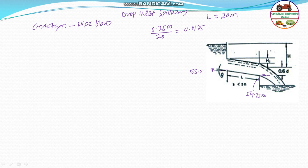The headwater elevation is given as 56.60 meter, and the tailwater elevation is 53.90 meter. The tailwater is not required in this case, but the headwater is very important. The total head is measured from the outlet invert to the headwater elevation.